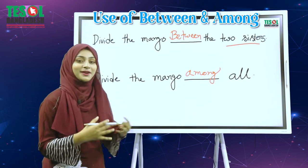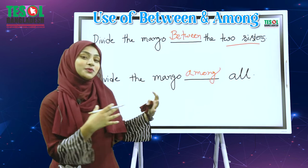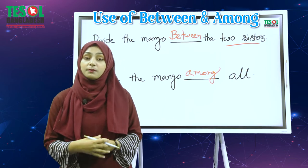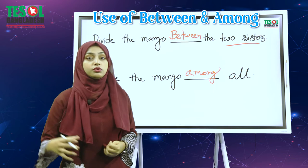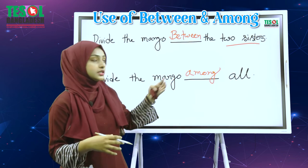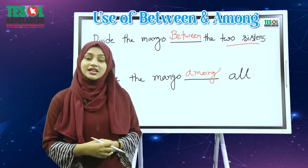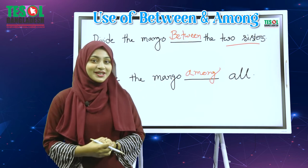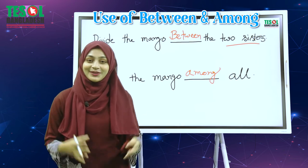So I hope aphanera buchte berae chan — ekhanei theke between and among preposition aamraa kone-kone situation e, kone-kone sentence e use korbo, shetaab haalomo to haitoa buche ghechi, so ekhanei theke aar kono bhuul haave na.